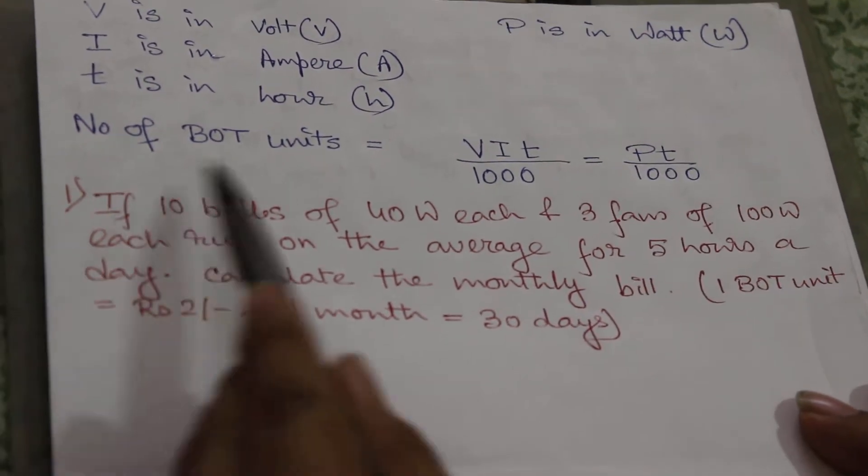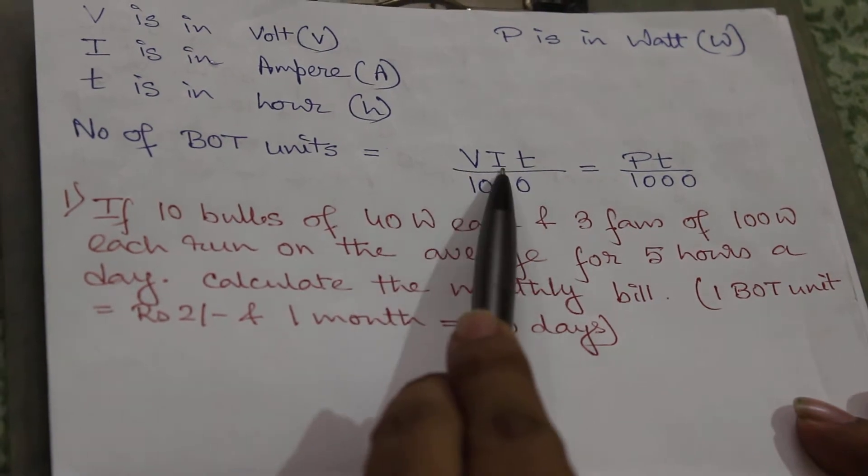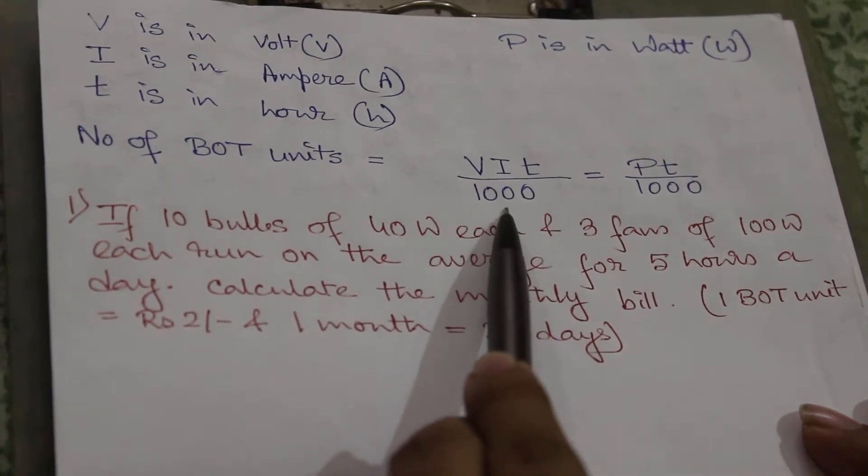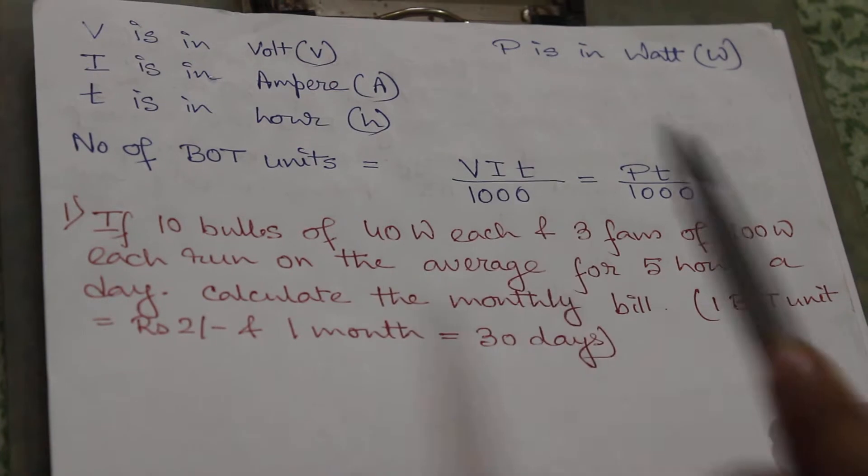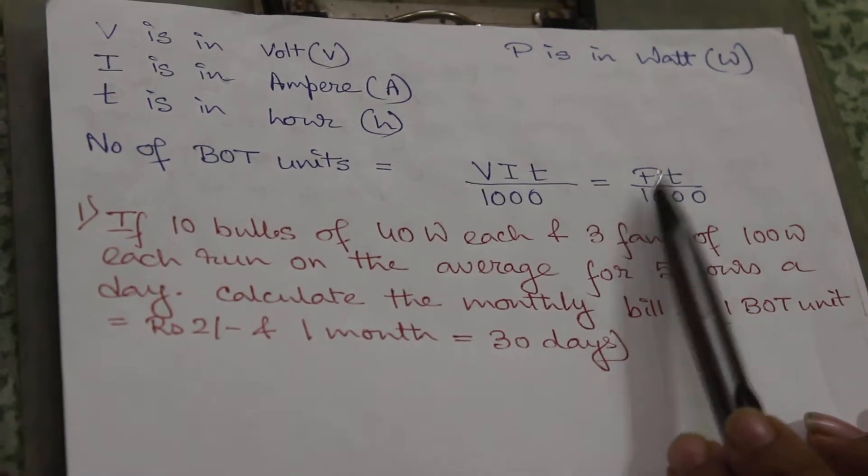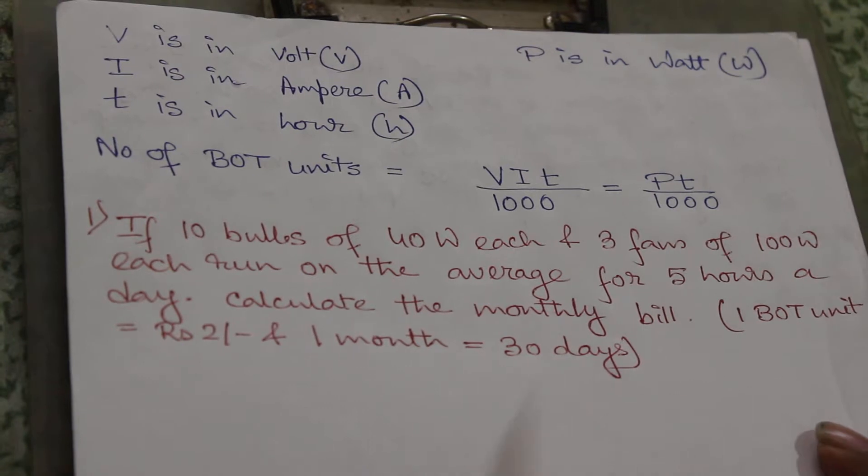So the number of BOT units will be voltage into current into time by 1000. As Vi equal to P, so it will be converted into power into time by 1000.